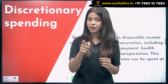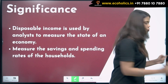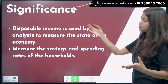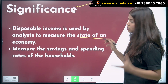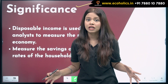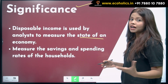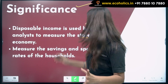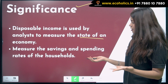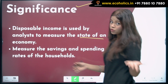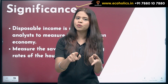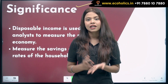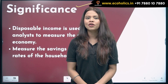Disposable income is used by analysts to measure the state of an economy. It tells you about household spending and saving, and measures the savings and spending rates of households. I hope disposable income and discretionary income are clear. Please like, share, comment, and subscribe to our channel Ecaholics. Thank you.